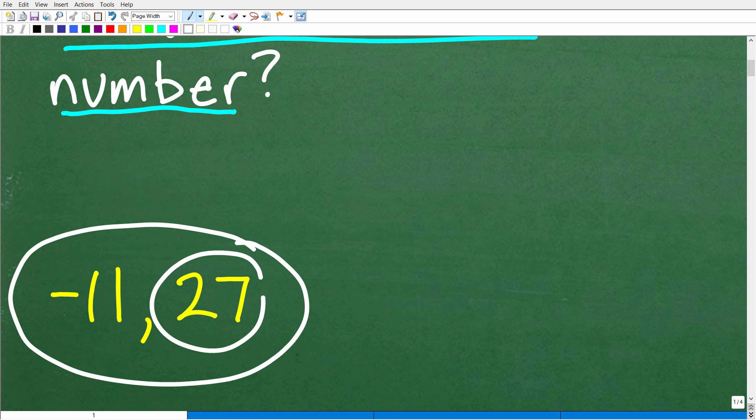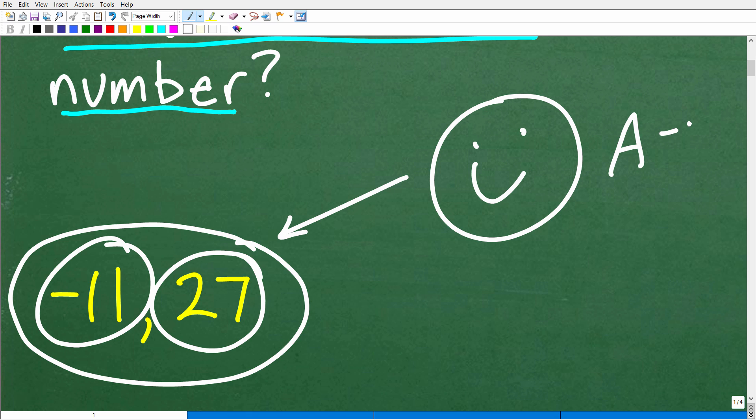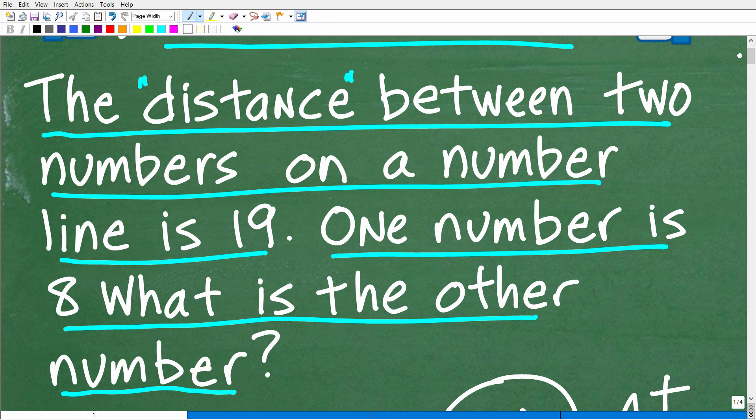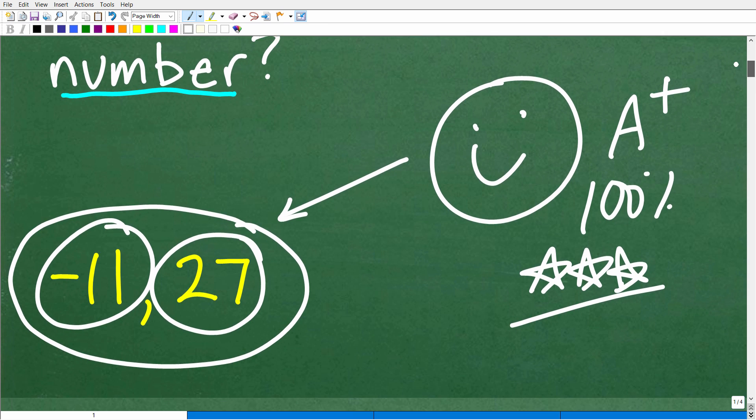Now, let's suppose you got one of these correct. In other words, you said, oh, my answer is 27 or negative 11. So I would say, in that circumstance, you did a pretty good job. I will definitely give you a happy face and an A minus. But for those of you that actually got both of these correct, that is fantastic. I must give you an A plus, a 100%, and multiple stars so you could brag to your friends and family that you are a professional, certified expert in the area of number lines and distance between numbers on a number line.